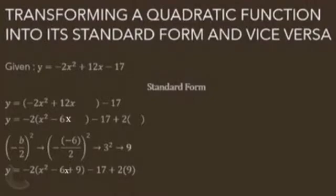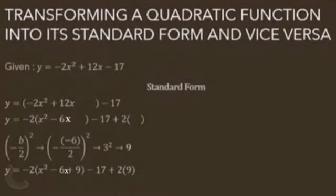Then the second step is to factor out a. If a is equal to 1, proceed to step 3. But in this case, our a is negative 2 and it's not 1, so we should factor out a.